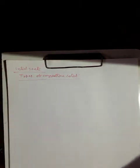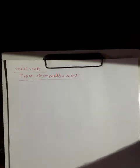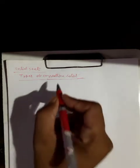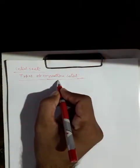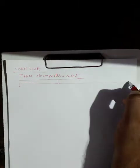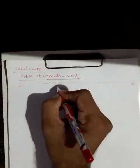In the last video we discussed the types of solids, namely crystalline solid and amorphous solid. Now we will discuss the types of crystalline solid. Crystalline solids have been classified on the basis of the nature of the constituent particles into the following four types.